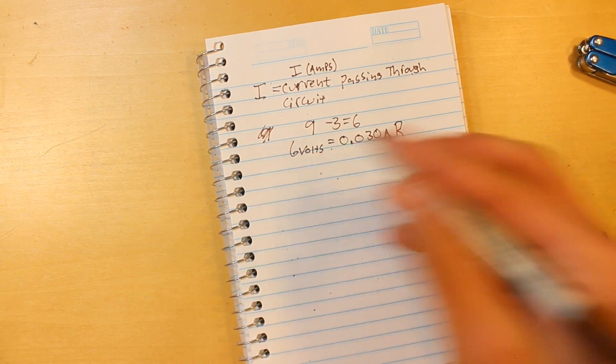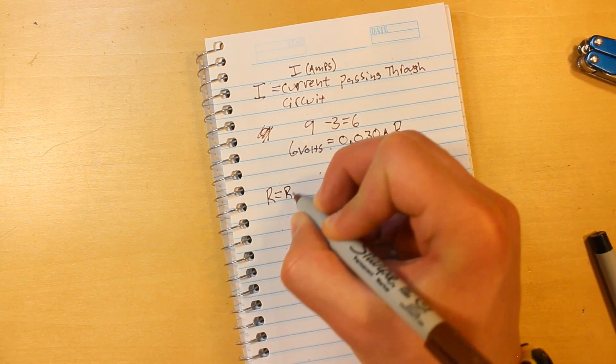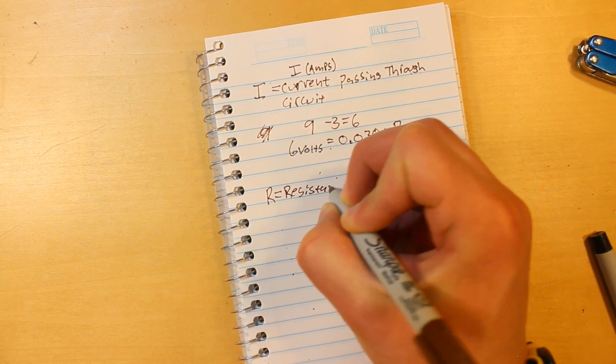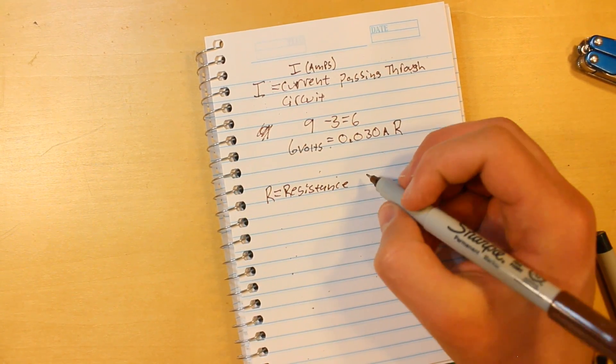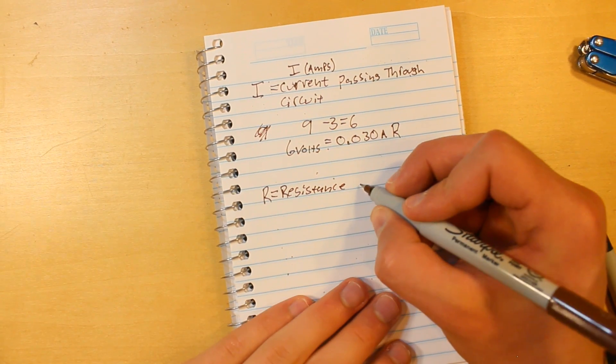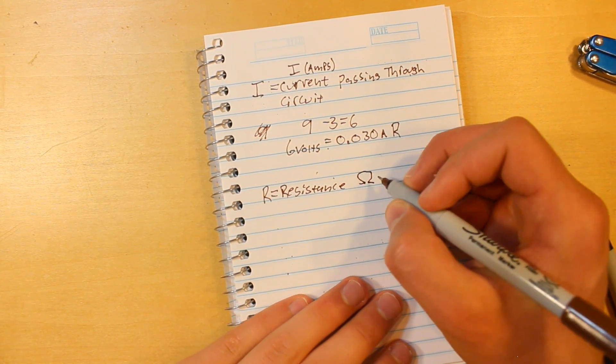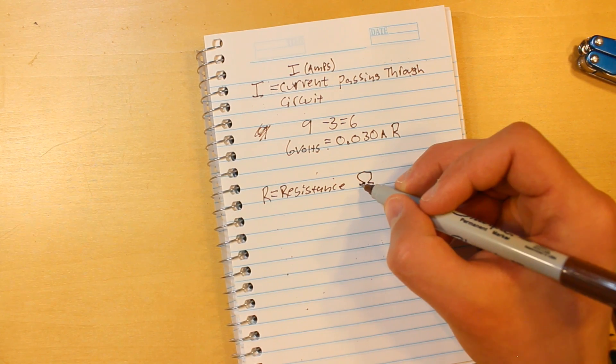Now let's talk about the resistance. R equals resistance, and resistance is shown by the Greek letter Omega. You've probably seen this symbol around.